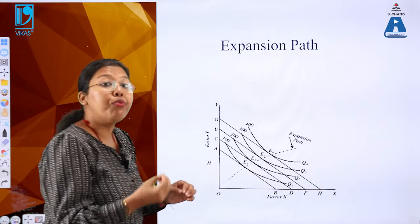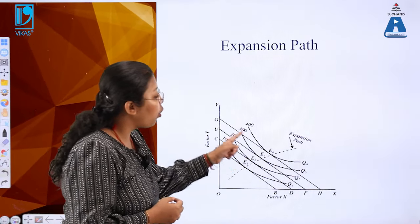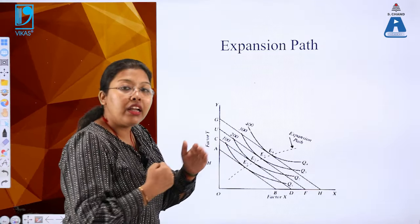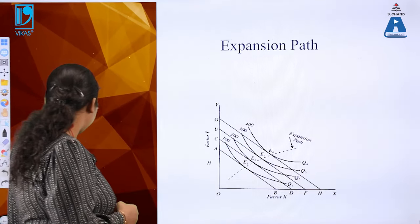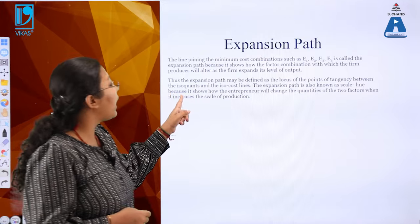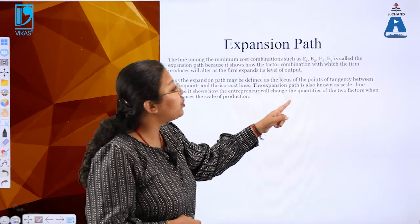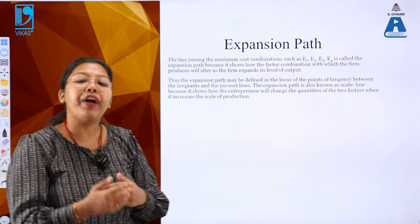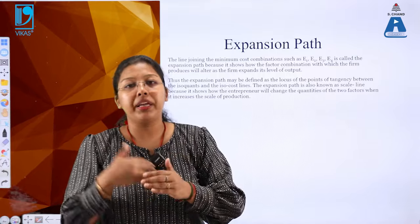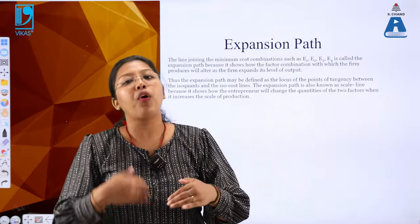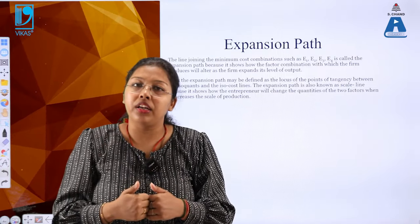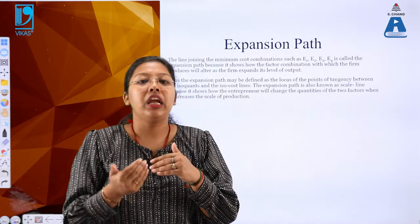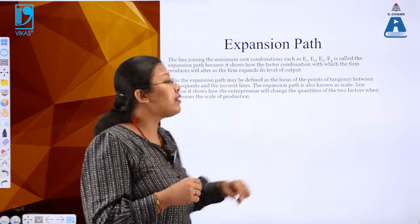Expansion path may be defined as the locus of all points of tangency between isoquants and isocost lines. Locus of points means the combination of all points - specifically the tangency points where isoquants and isocost curves intersect with each other. The expansion path is also known as the scale line, because it shows how the entrepreneur will change the quantities of two factors.